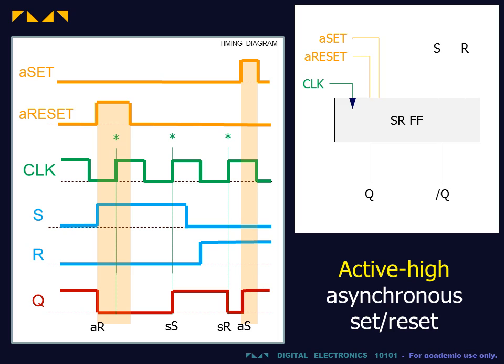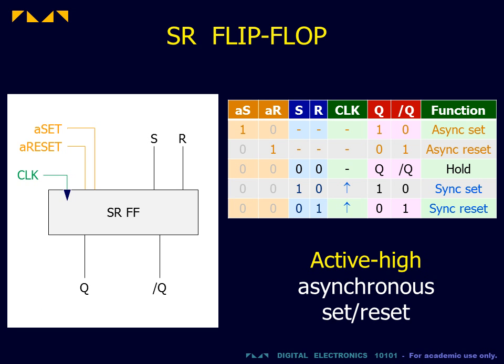The asynchronous set and reset in this example are active high because these functions are activated when A set and A reset are one. In the function table, the asynchronous inputs are seen to be active high because the presence of a one at these inputs executes the designated function. We also note that these control inputs override all other inputs.